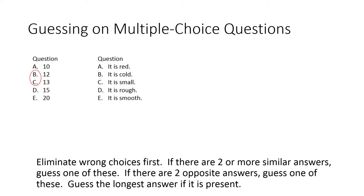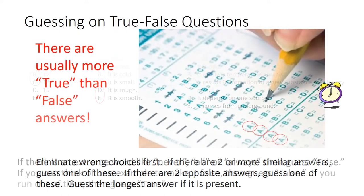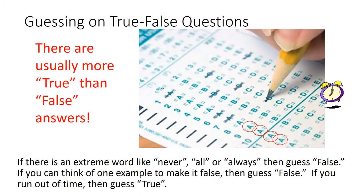Guessing on true-false questions: If there is an extreme word like never, all, or always, then guess false. If you can think of one example to make it false, then guess false. If you run out of time, then guess true. There are usually more true than false answers.